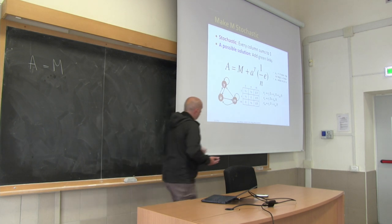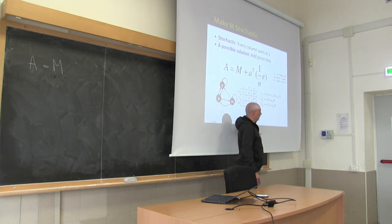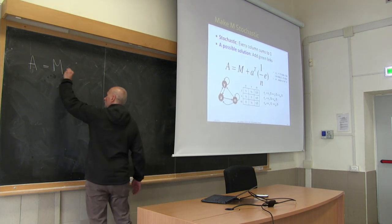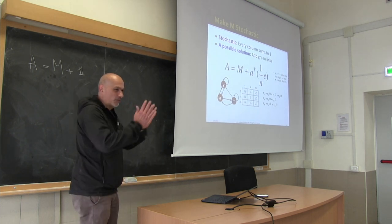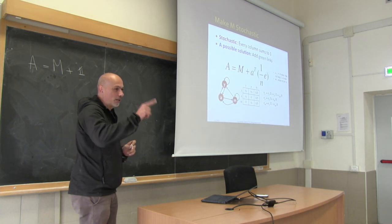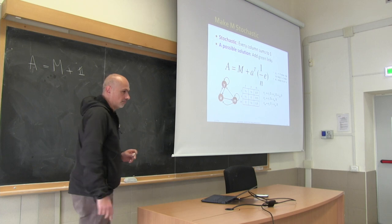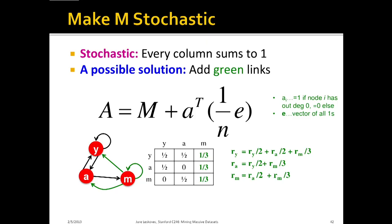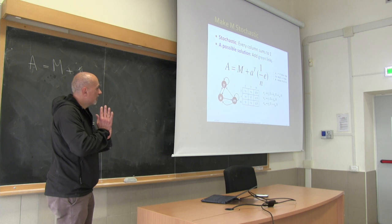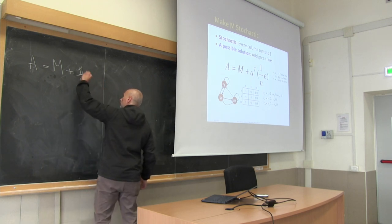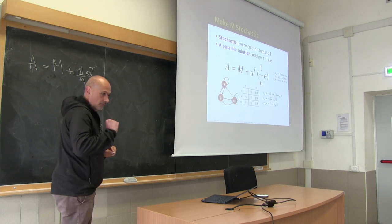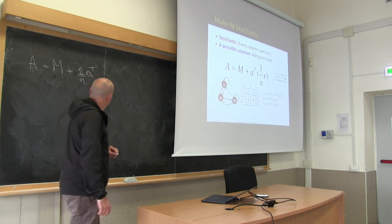How can we do this? We have to replace each zero column with a column of one over n. The vector a of dead-end indicators: where should we put the ones? In every position corresponding to a dead end — every column corresponding to a dead end. Let me make an example.